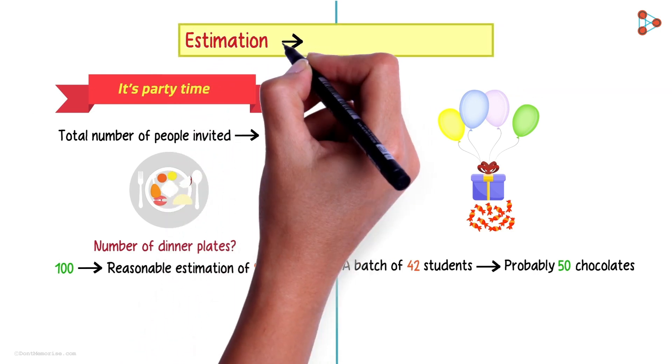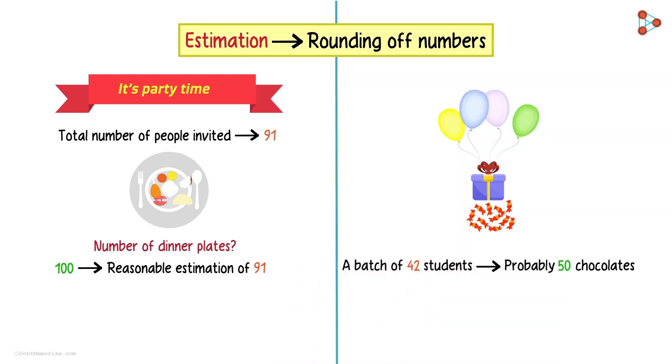We mostly estimate numbers by rounding them off. Now I want you to understand something really well. Estimation solely depends on one thing. It depends on the number which is being estimated. It depends on what the number represents.